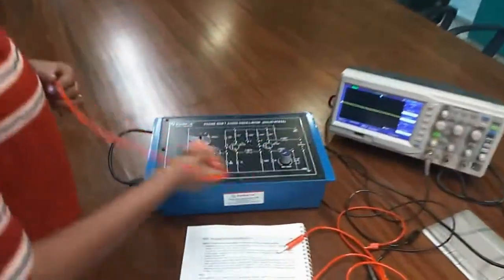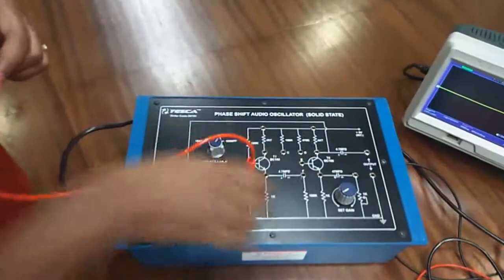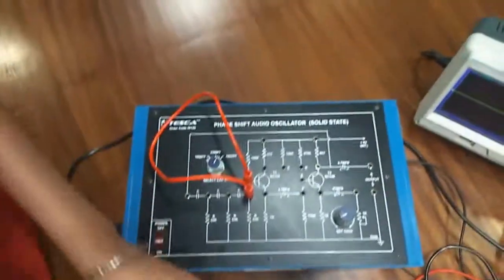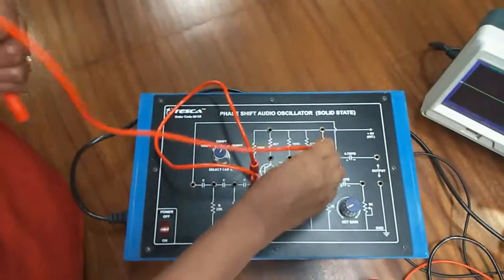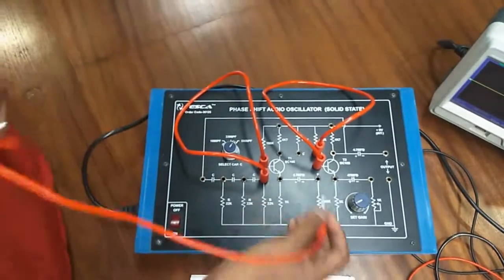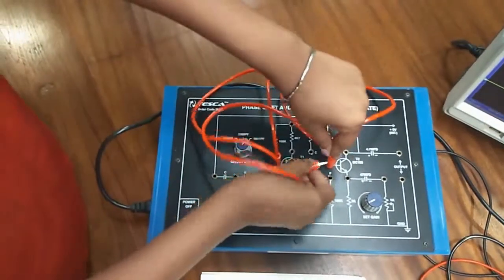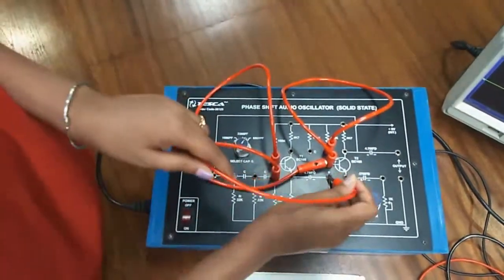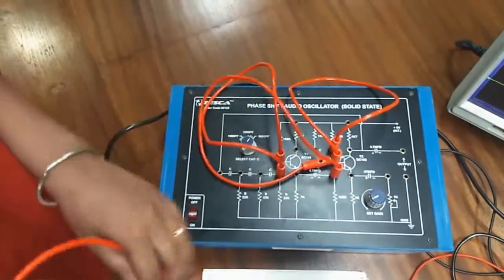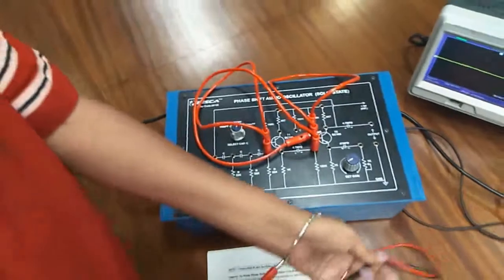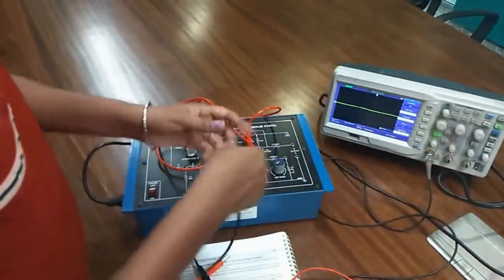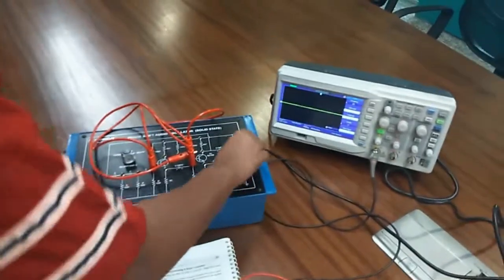So first we will connect A and B, then D with E and E with F. Connect the output to the CRO.